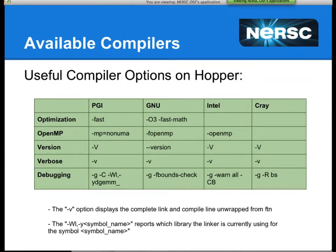These are our recommended optimization options on Hopper, compiled by my colleague Mike Stewart, who has built a bunch of different applications and determined the fastest default parameters across them. Generally, PGI uses -fastsse and GNU uses -O3 -ffast-math. For Intel and Cray, surprisingly, the default with basically no extra option is actually the best choice.